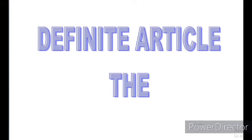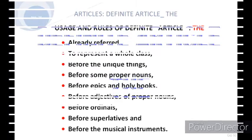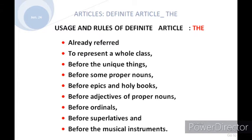Now we will move to the definite article 'the.' The definite article 'the' — it is used before countable and sometimes uncountable nouns, and it has some specific rules. There are about 8 to 9 rules. We will see them one by one.